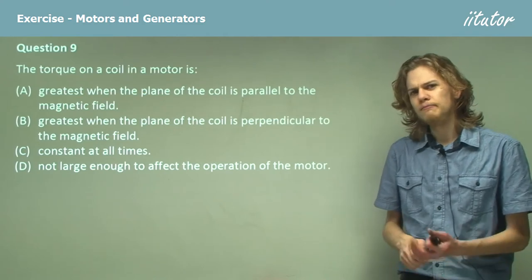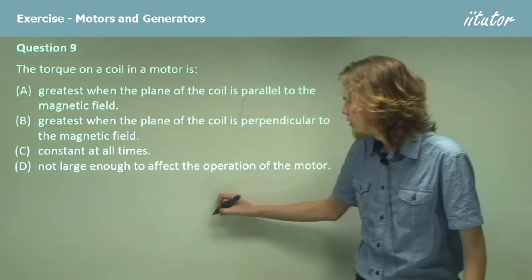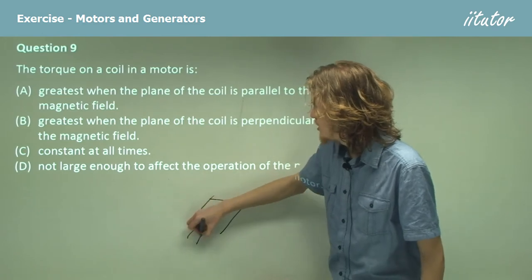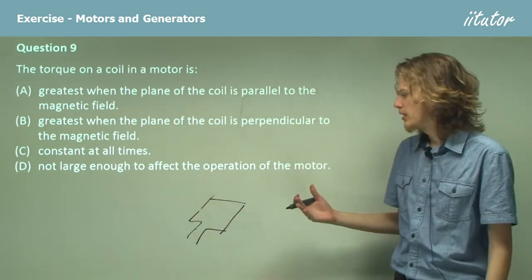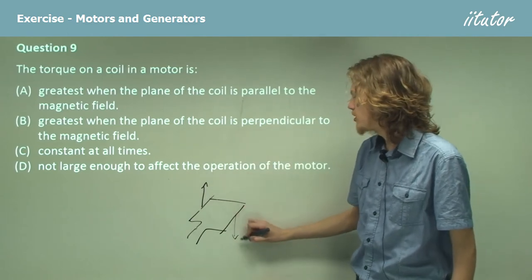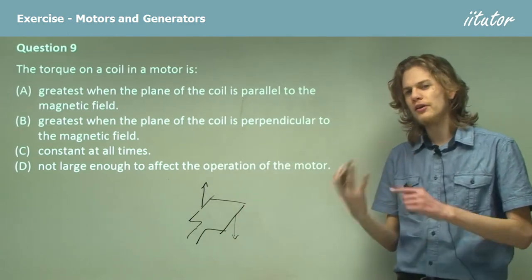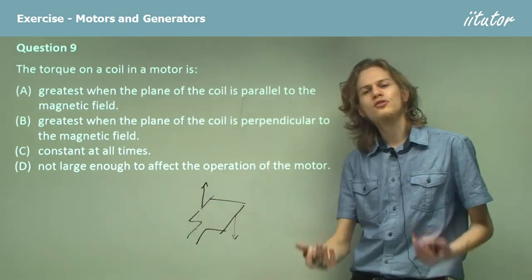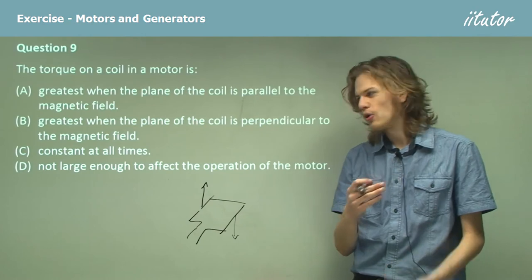So let's try and figure this out. If we have a coil in a magnetic field, it needs to turn, right? The force will always be straight up or straight down depending on which way the current is flowing. If the coil is horizontal like this, then this will obviously tend to turn the coil.